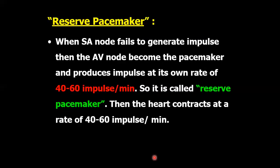Reserve pacemaker: when the SA node fails to generate impulse, the AV node becomes the pacemaker and produces impulse at its own rate of 40 to 60 impulses per minute. So the AV node is called the reserve pacemaker.